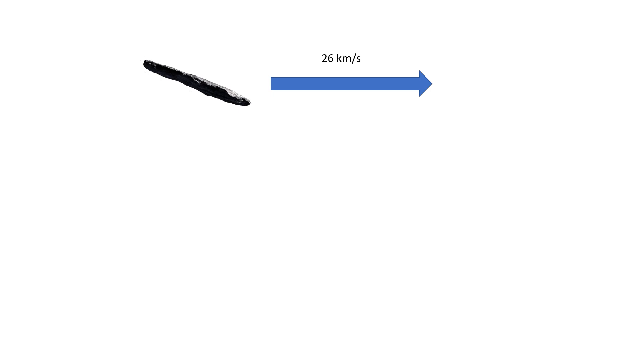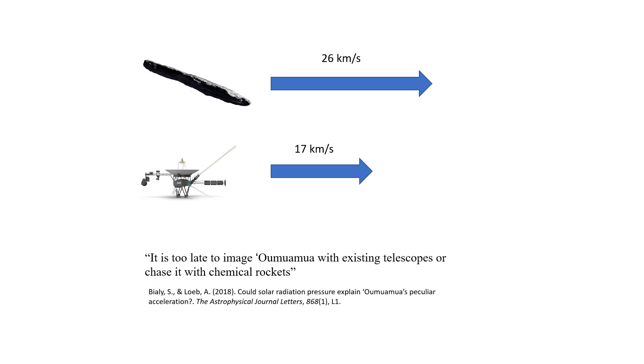Now, 26 kilometers per second is very fast because the fastest human-made object that is currently traveling in interstellar space, the Voyager probes, travel at about 17 kilometers per second. That has led some researchers to claim that Oumuamua is actually too fast to be chased with existing chemical rockets.